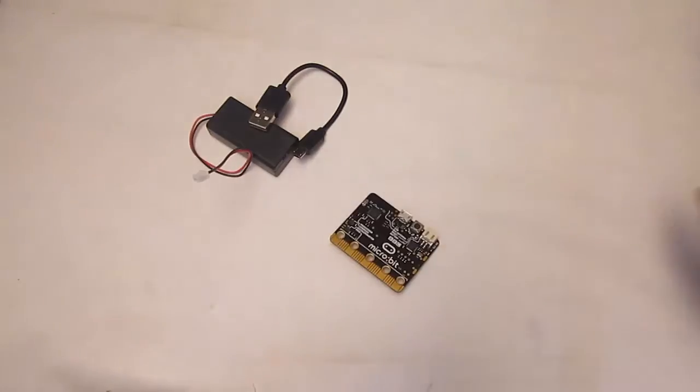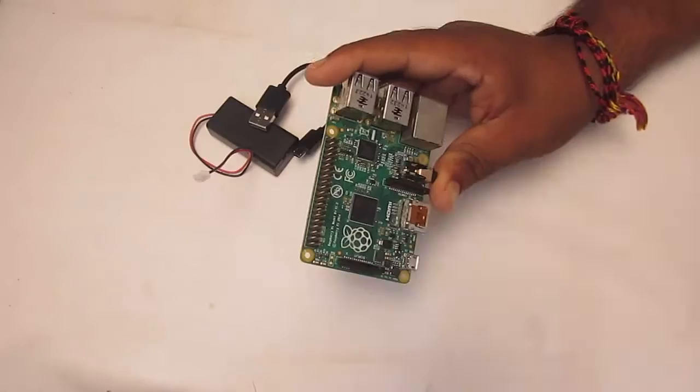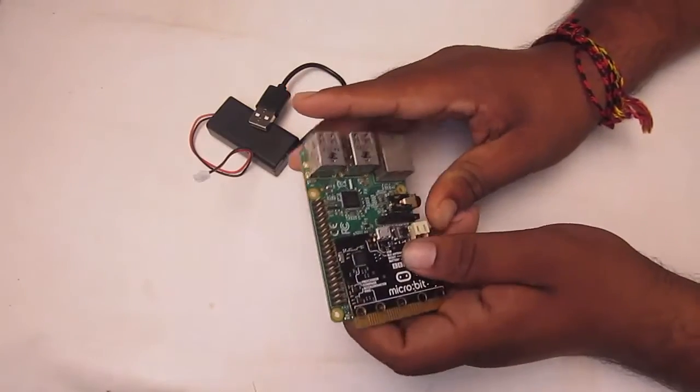This particular BBC micro:bit module, as compared to Raspberry Pi, is almost half in length but a little bit shorter in width.